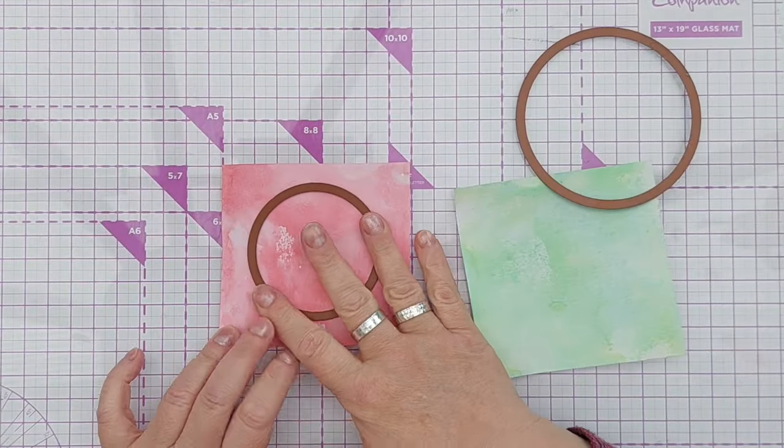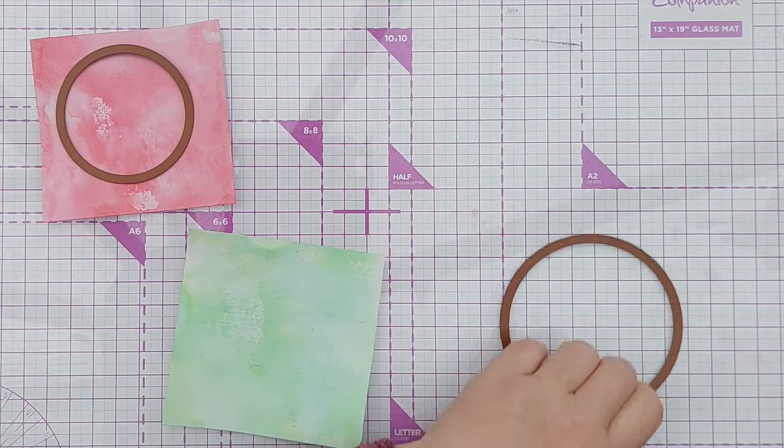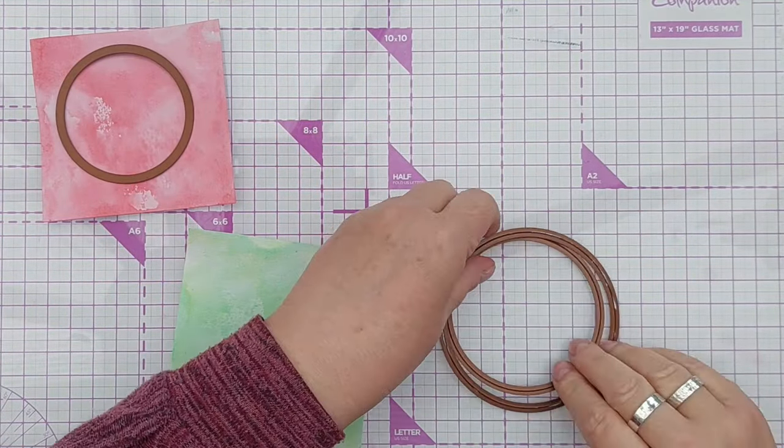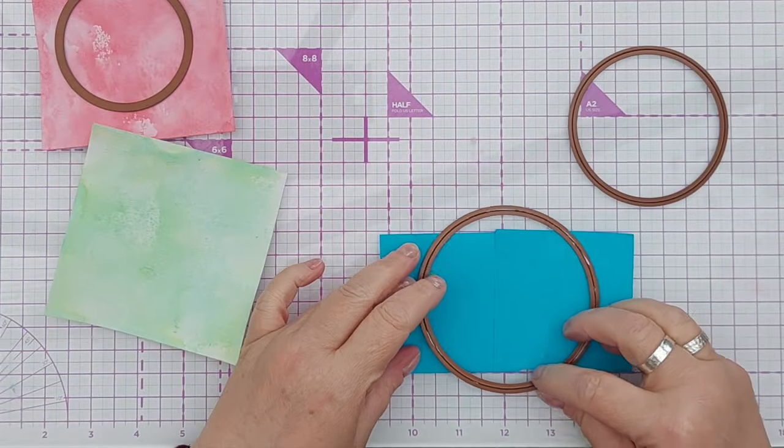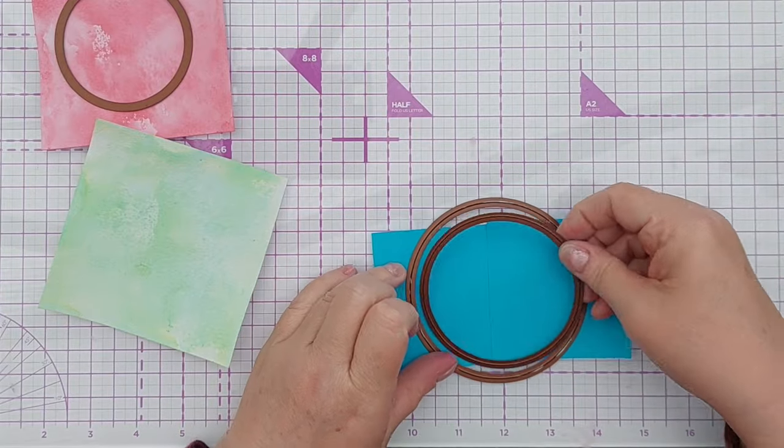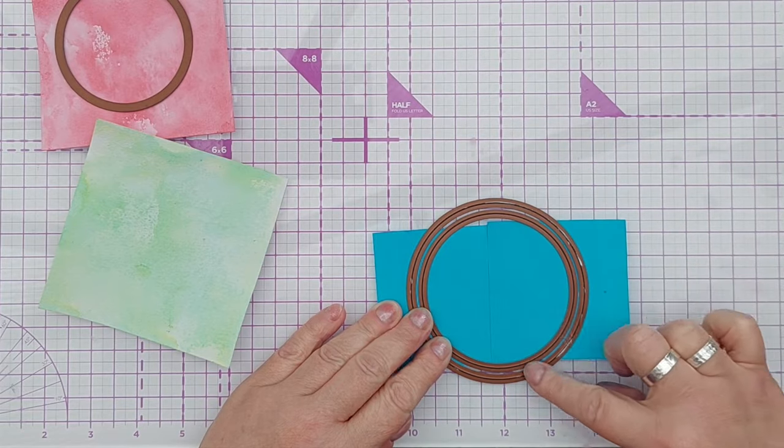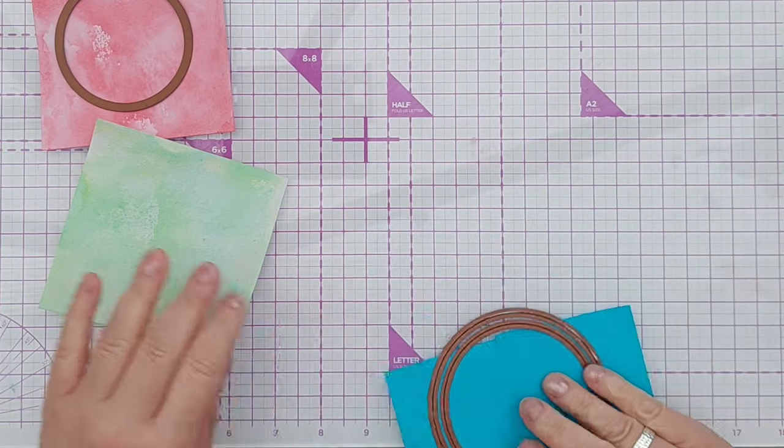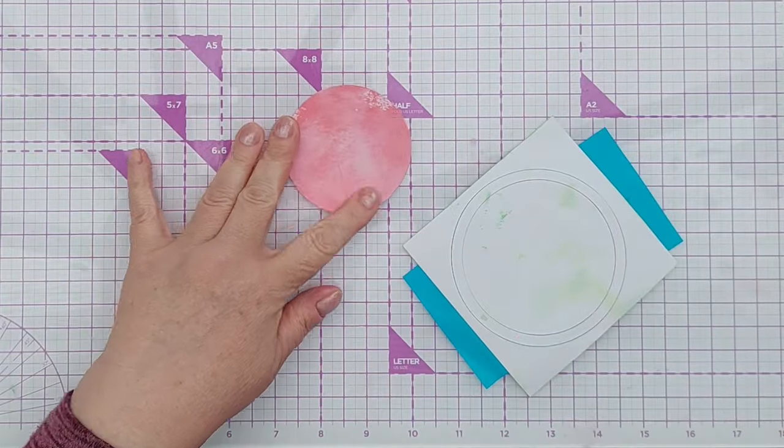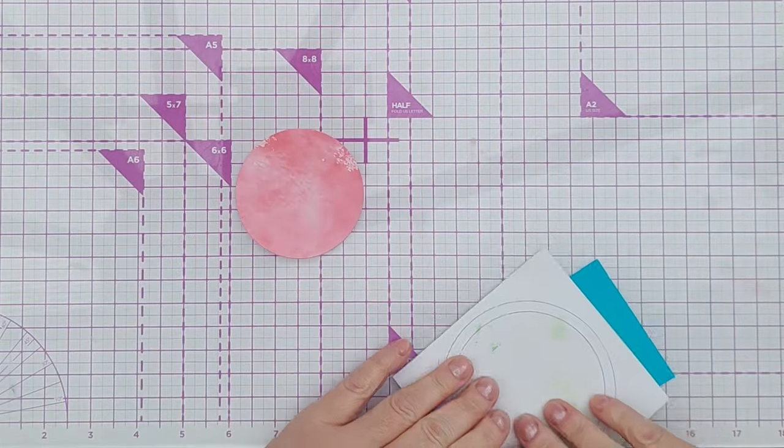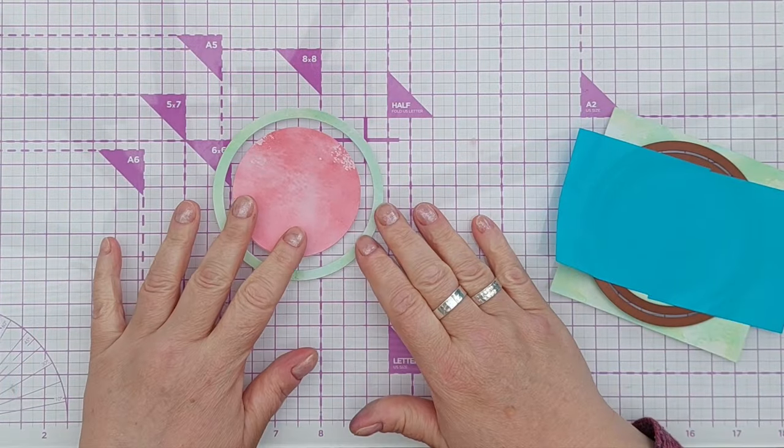Now I'm going to cut the circles with the circle die. For the green, I only want a ring, so I've got two sticky notes here and I'm going to line up these dies so there's an equal size gap all the way around and cut that. So here we have the interior of our melon and the outer green ring of our melon.